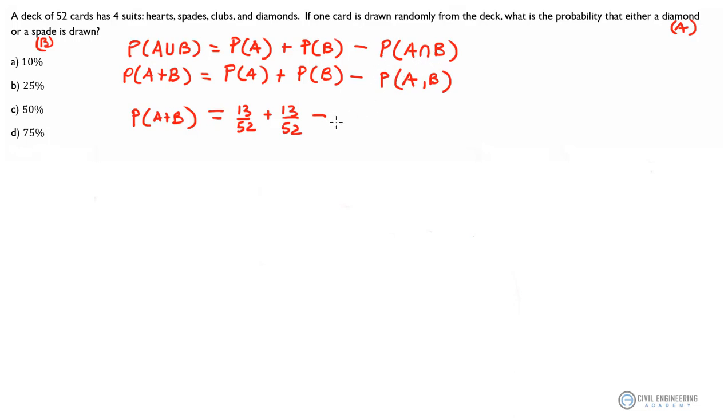We're only pulling out one card at a time. The probability that A and B happened—the probability that both a diamond and a spade are drawn out of the deck—is zero. That can't happen, okay?